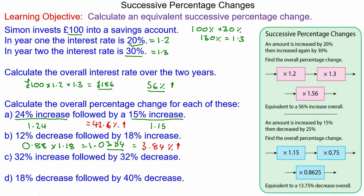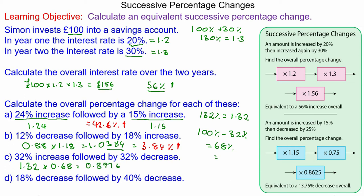For question c, we have a 32 percent increase, which is 132 percent, and 132 divided by 100 is 1.32. This is followed by a 32 percent decrease, which is 100 minus 32 percent, which is 68 percent, or 0.68. Multiplying 1.32 by 0.68 gives a final value of 0.8976. The overall percentage change is the difference between 100 percent and 89.76 percent, which works out as a 10.24 percent decrease.